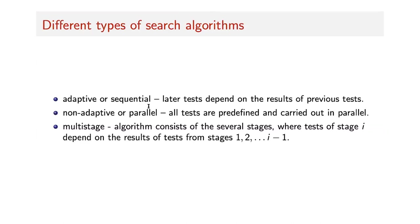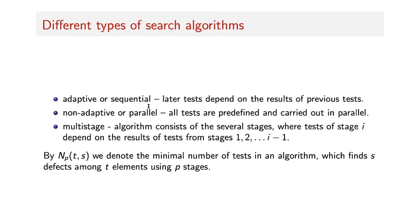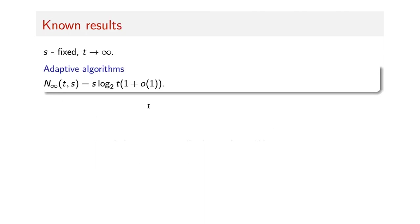We introduce the quantity N_P(T, S): the minimum number of tests in an algorithm which can find S defective or fake coins among T coins using P stages. For adaptive algorithms, it is known that the number of tests is equivalent to S times the binary logarithm of T, which is a simple result — you can just use binary search S times to find all the coins.